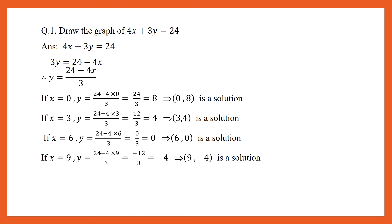Let us do one more question. Draw the graph of 4x plus 3y is equal to 24. Our linear equation in two variables is 4x plus 3y equal to 24. Let us express y in terms of x. Therefore, it will be 3y is equal to 24 minus 4x, and y will be (24 minus 4x) by 3.